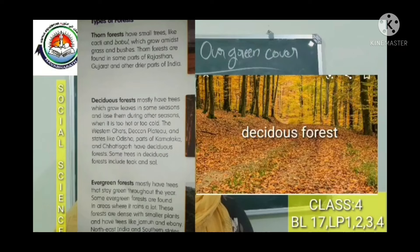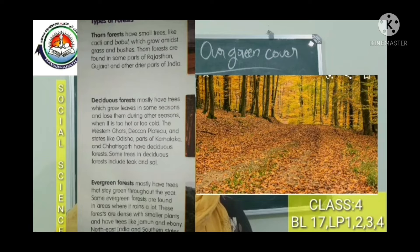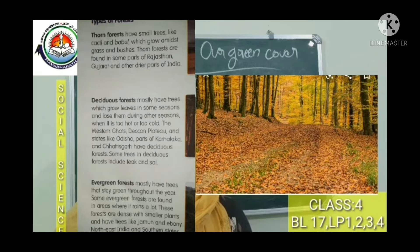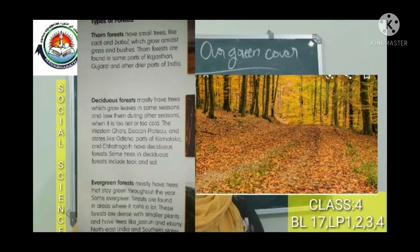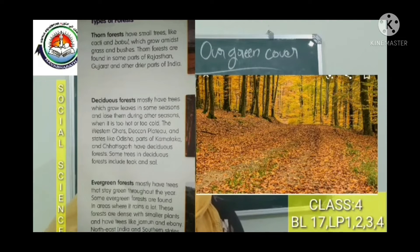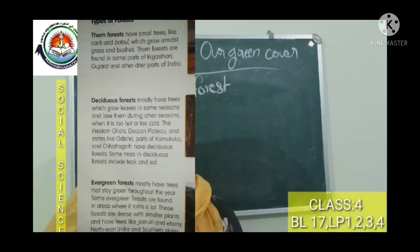Deciduous forest: These mostly have trees which grow leaves in some seasons and shed them during other seasons — when it is too cold or too hot. States like Odisha, parts of Karnataka and Chhattisgarh have deciduous forests. Some trees in deciduous forests include teak and sal.